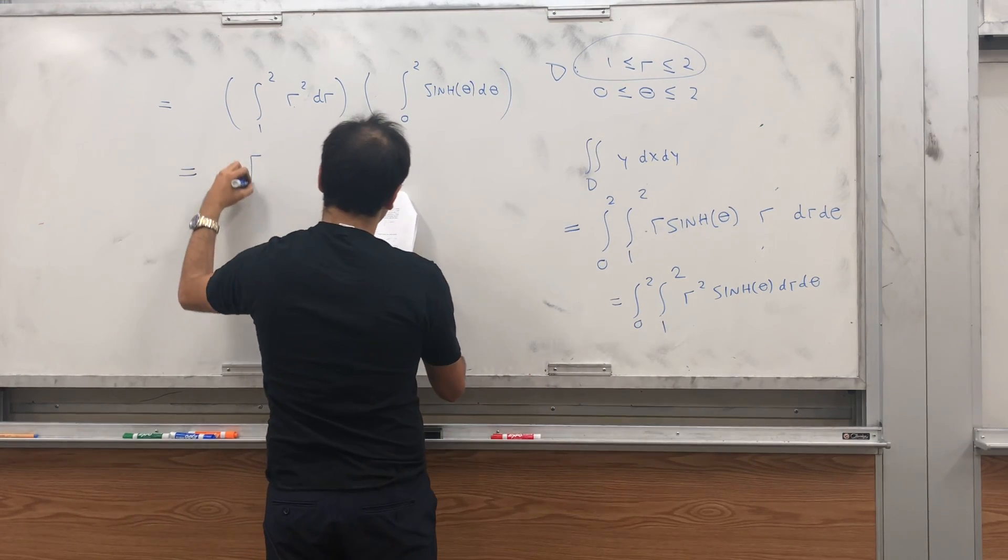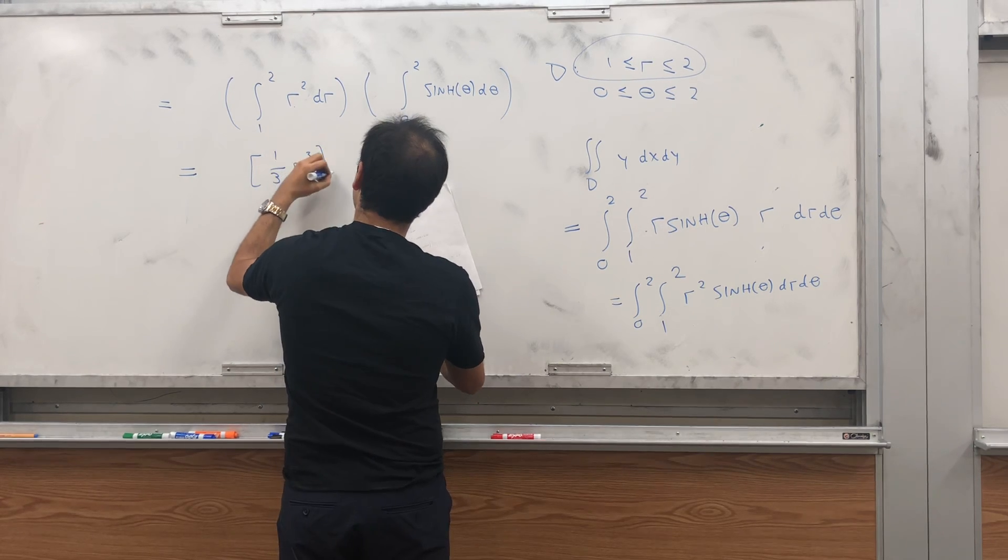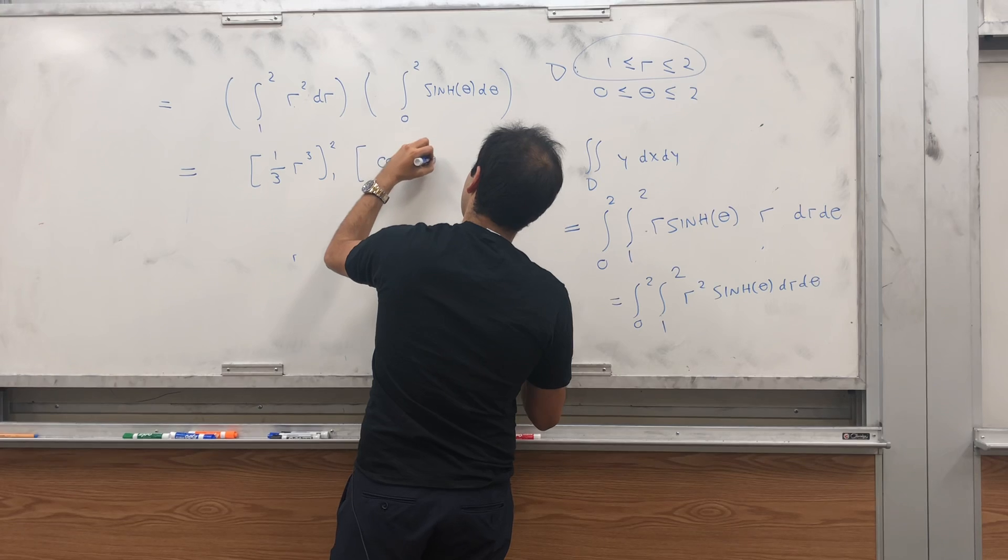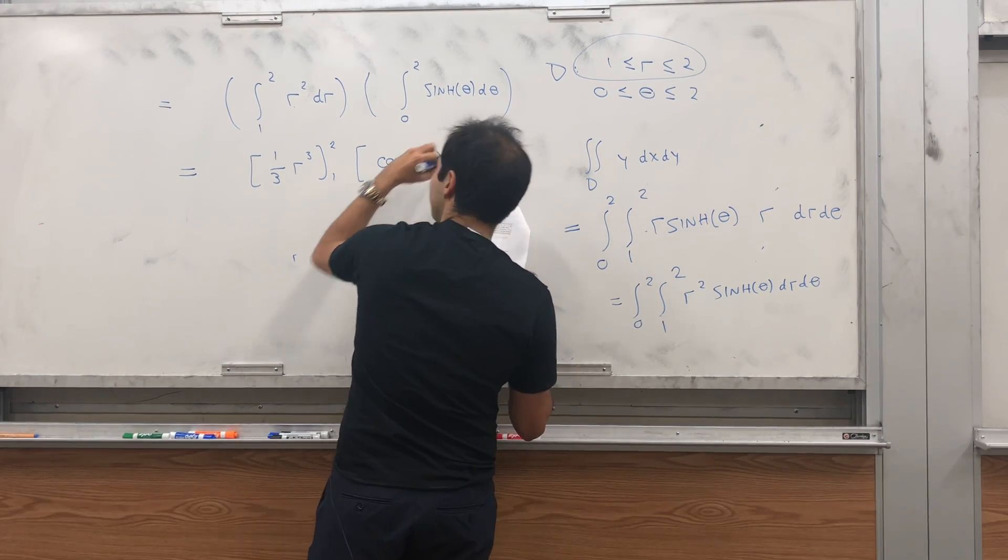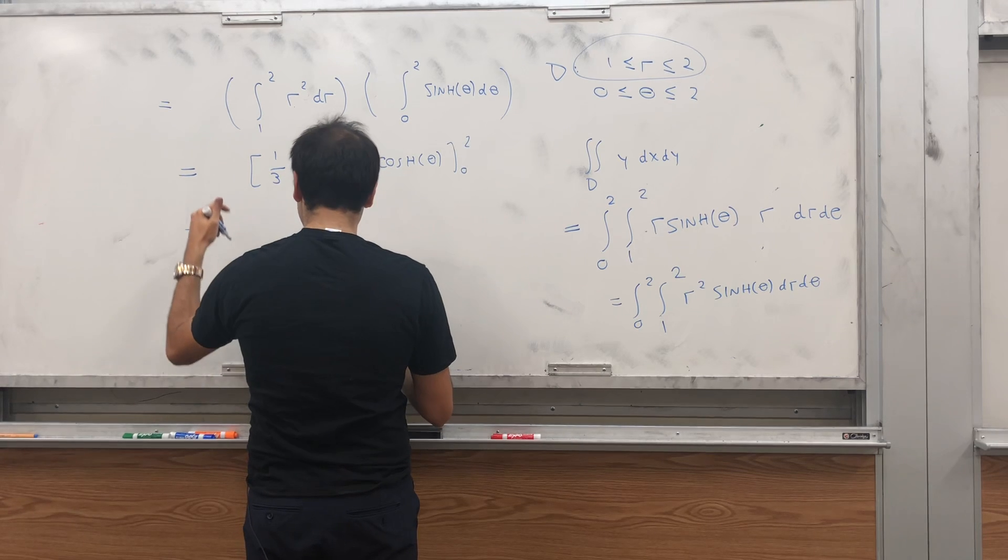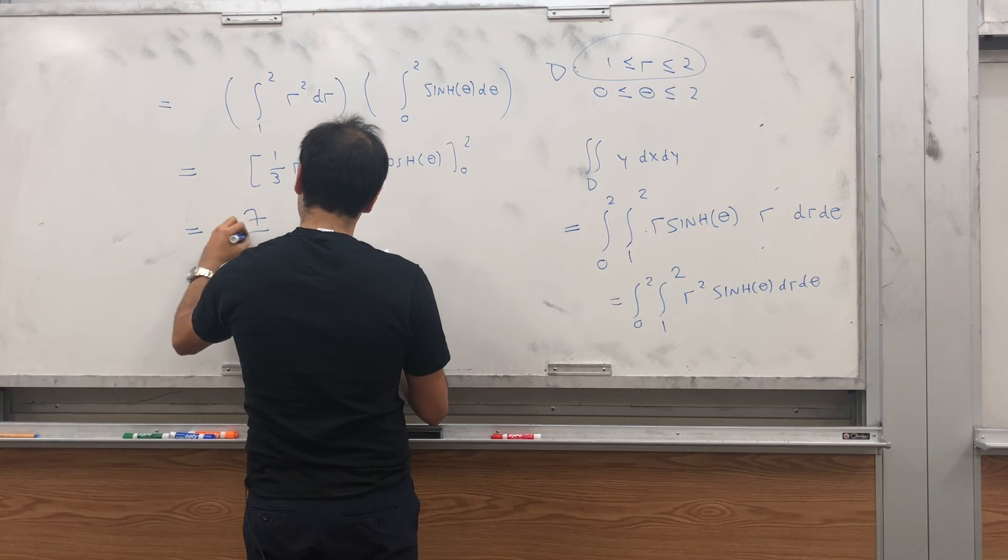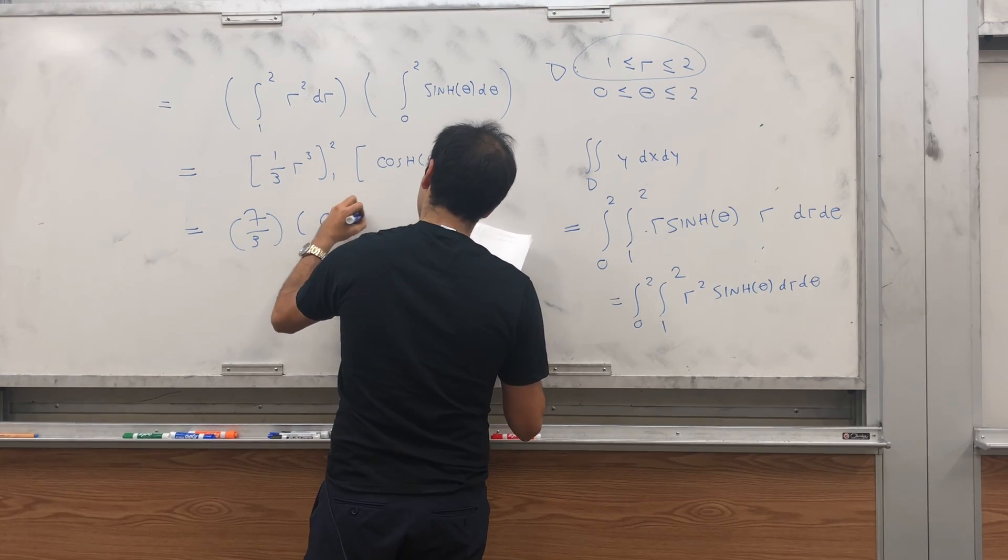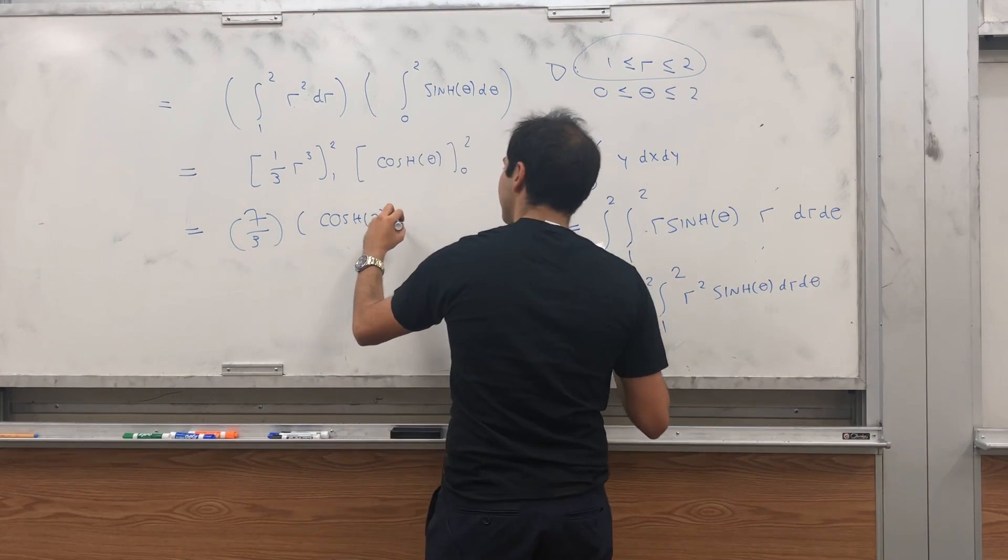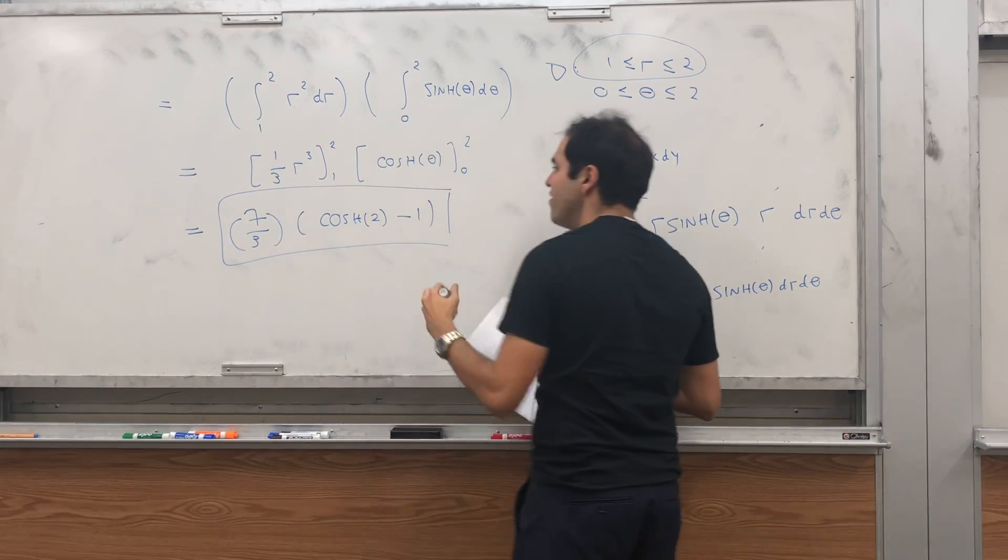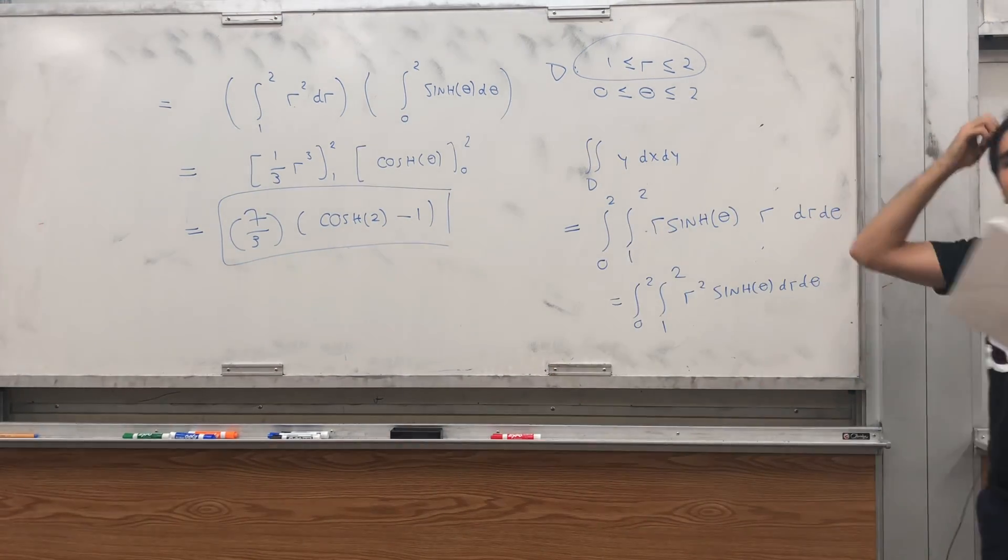And that becomes 1 third r cubed from 1 to 2 and then cosh of theta from 0 to 2 and that should become 1 third times 8 minus 1 so 7 thirds, cosh of 2 minus cosh of 0 which is 1 and we get our end result 7 thirds cosh of 2 minus 1.